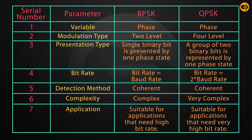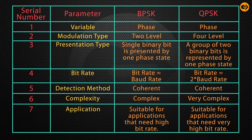Now let us discuss the comparison between BPSK and QPSK. The variable parameter in both BPSK and QPSK is phase. The modulation type in BPSK is two-level; in QPSK it is four-level. In BPSK, a single binary bit is represented by one phase state, but in QPSK a group of two binary bits is represented by one phase state.